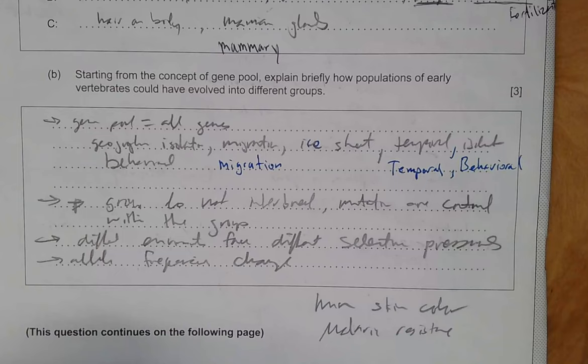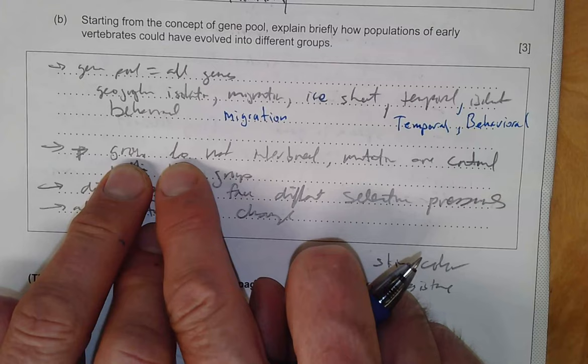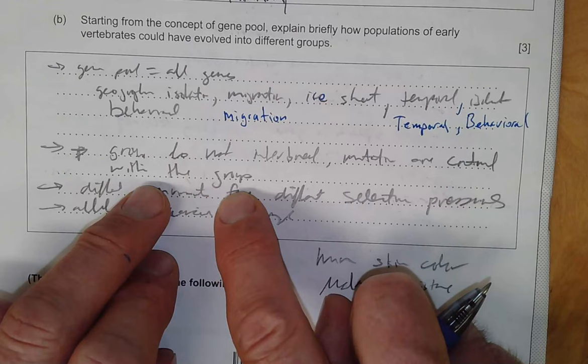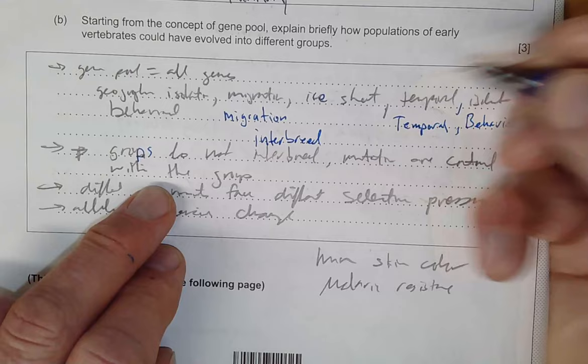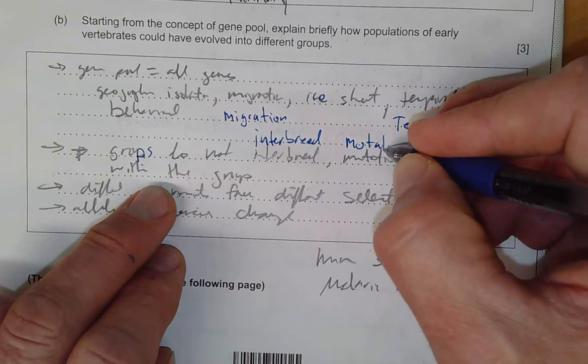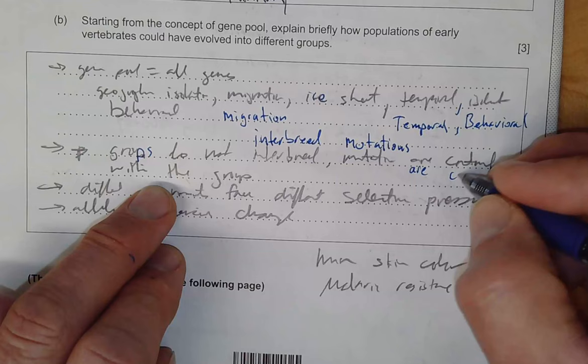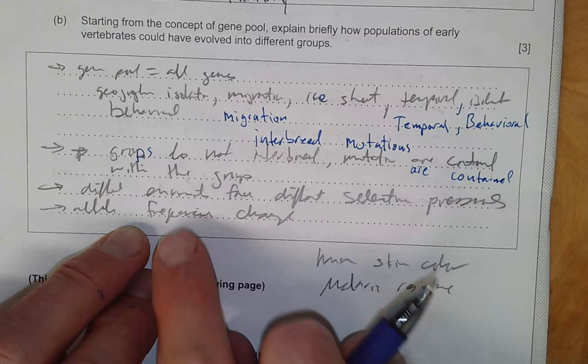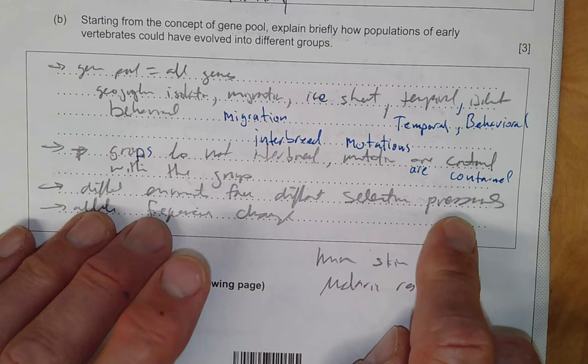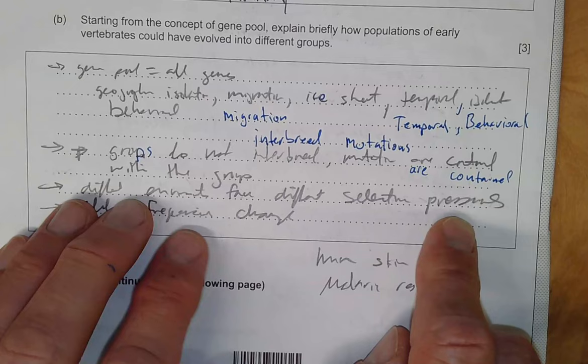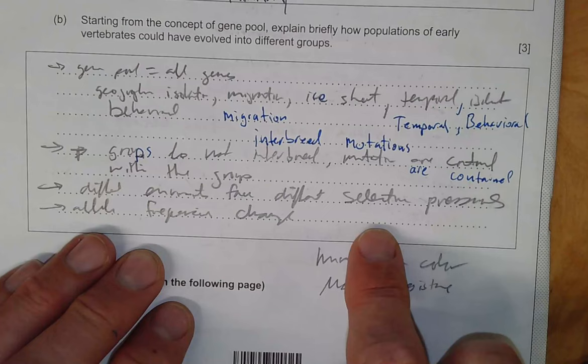So what happens is the groups do not interbreed. Mutations are contained within the group. Groups do not interbreed. And then of course different environments are going to create different selective pressures on groups, pressuring for more fur, less fur, darker fur, lighter fur, whatever that may be. A different hunting strategy—that's going to affect the organism and what they end up looking like.